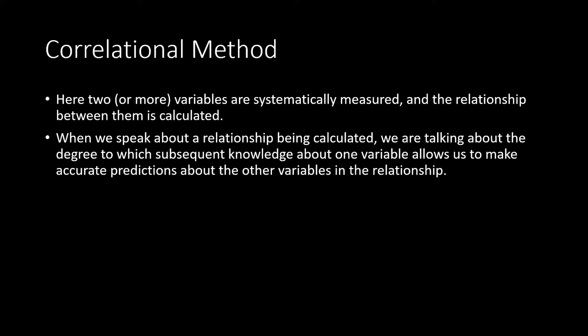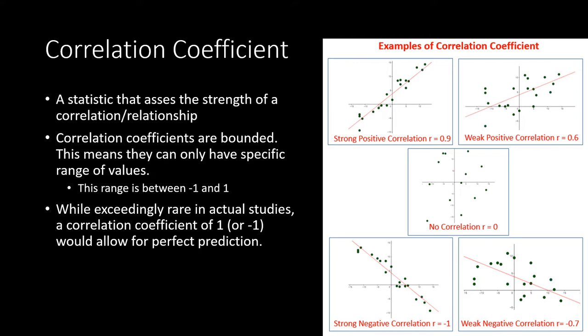Moving on to the correlational method. The correlational method is oftentimes associated with the statistical technique of calculating correlations. Basically, in this method you take two or more variables, systematically measure them, and then quantify the relationship between them. Whenever we're talking about a relationship in scientific methods or statistics, what we are talking about is the degree to which knowledge about one variable can then be used to make predictions about other variables.